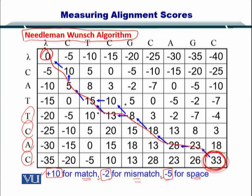As just mentioned, this should not be the case. Certain amino acids and nucleotides have a higher propensity to match or mismatch. Therefore, we need to consider all of these and then assign a score. In the previous approach, we had uniform scores — the same scores for match, mismatch, and gap — but that needs to change.